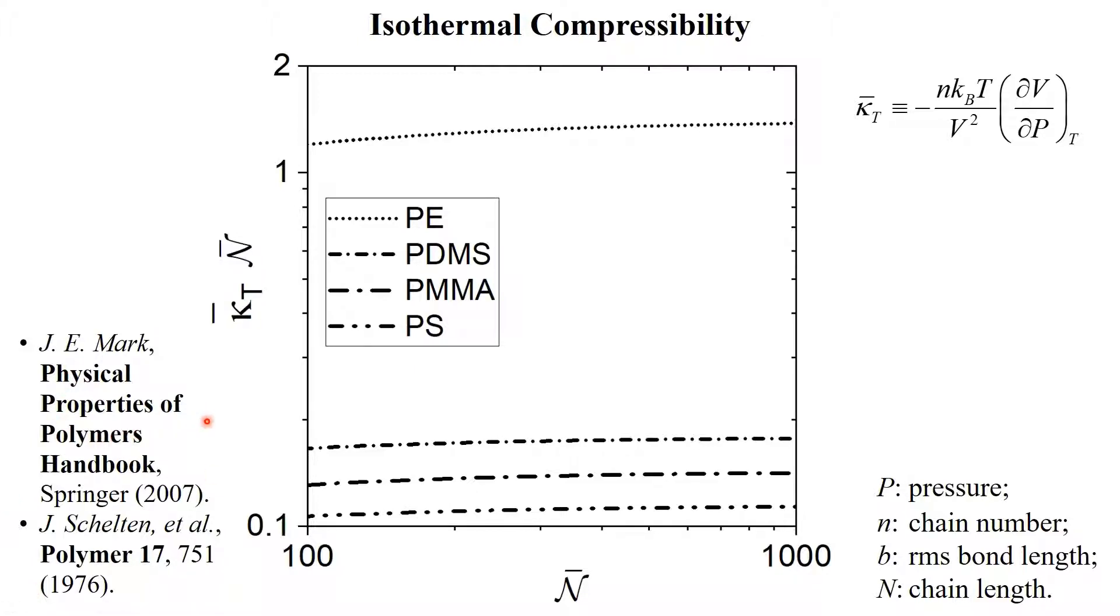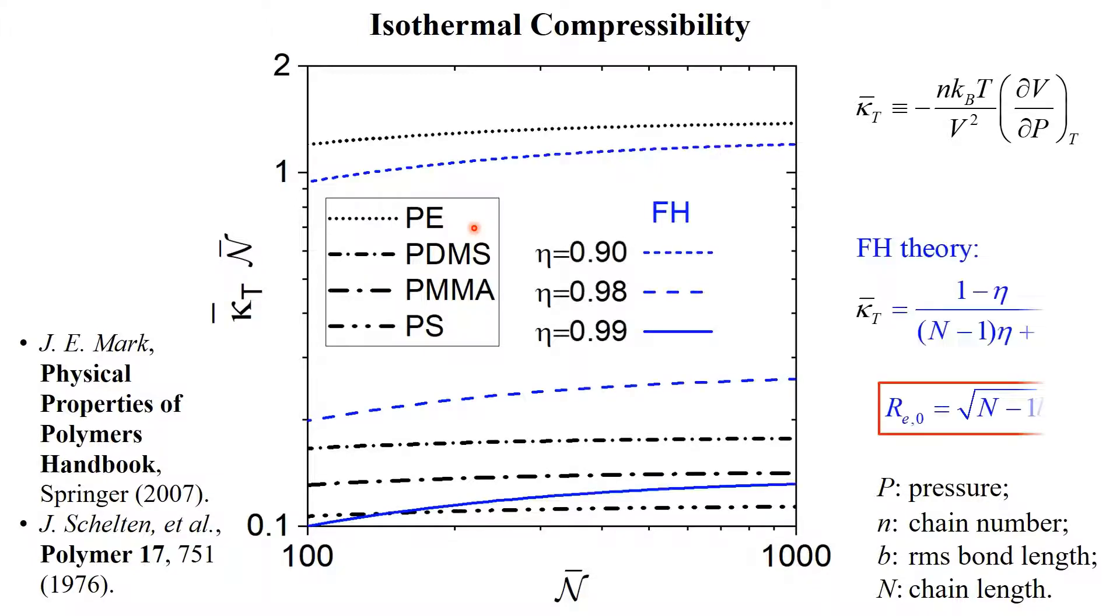Since real polymers are nearly incompressible, we expect our eta to be close to 1, and therefore use the Flory-Huggins predictions for athermal chains, which are independent of the lattice coordination number. We see that eta values in a range of 90% to 99% match the real polymers.